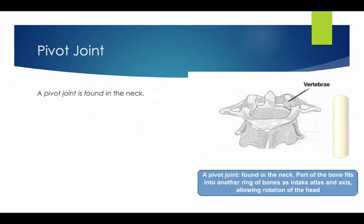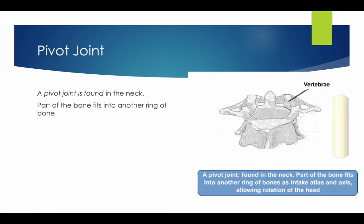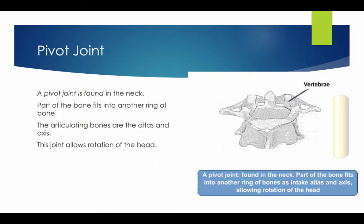A pivot joint is found in the neck. Part of the bone fits into another ring of bone. The articulating bones are the atlas and the axis. This joint allows rotation of the head.